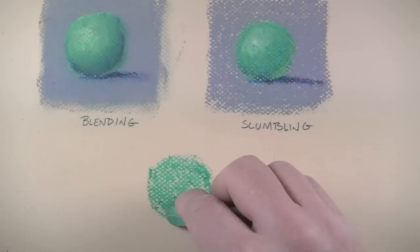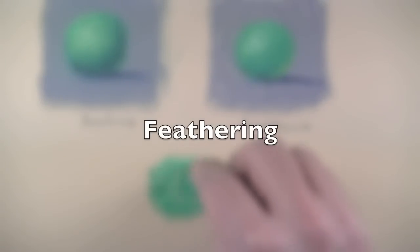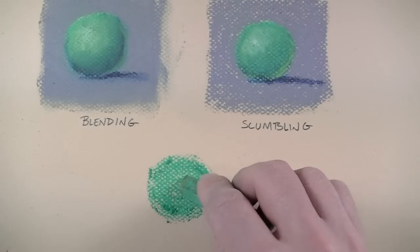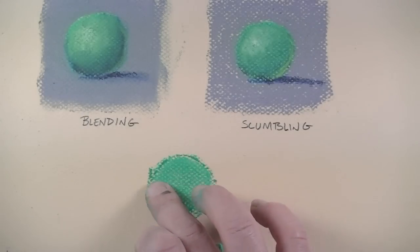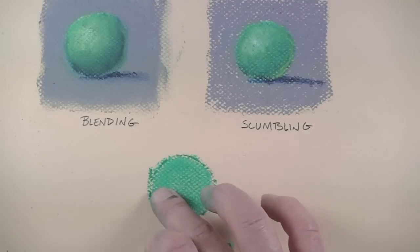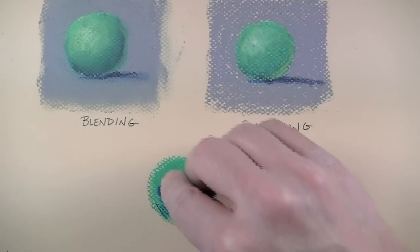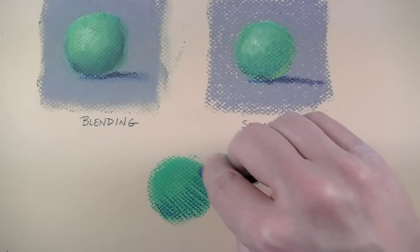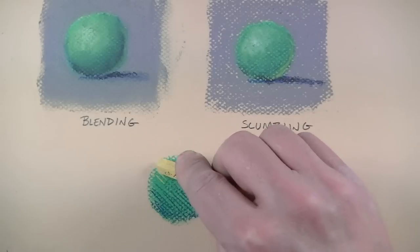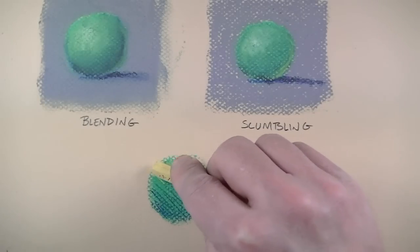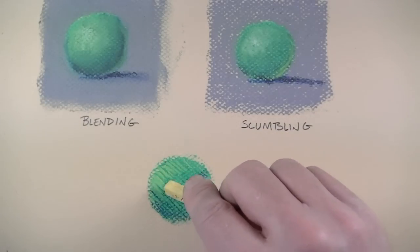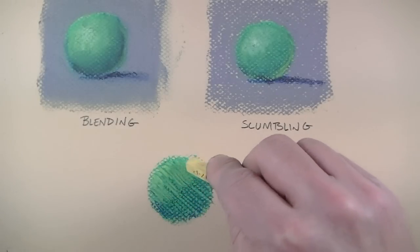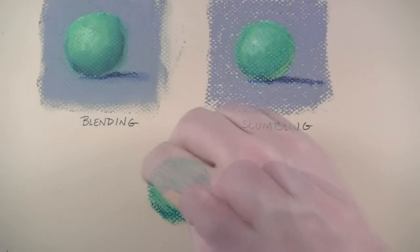The third technique we'll discuss here is called feathering. Feathering occurs when opaque layers of pastel are layered over the top of pre-existing applications of pastel but they're done so with linear qualities in mind. This technique is very similar to hatching. In this example I'm using hard pastels over the top of soft pastels. Because of a higher binder to pigment ratio hard pastels are able to come to a finer tip and keep that tip for a longer period of time. They are also less powdery than soft pastels.